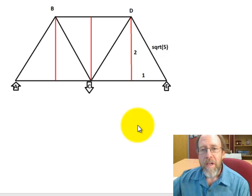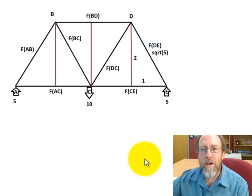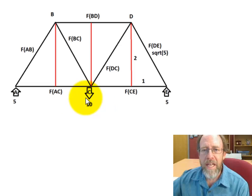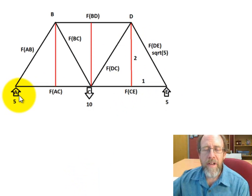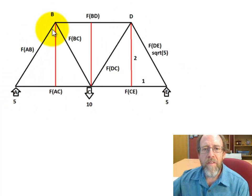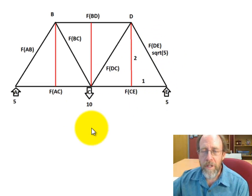Let's load this truss up. I'm going to make a dummy load of 10 downward, with reactions of 5 and 5 upward. You can see the geometry and the different members. With nodes A, B, C, D, E the members are: force AB, BD, AC, CE, and DE. You can see the geometries as you go along.